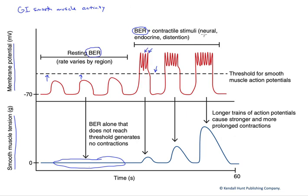That additional input can be neural from the enteric nervous system, it could be endocrine, or distension itself. Stretch of the wall of the GI tract due to the presence of food—those interstitial cells are actually sensitive to distension.